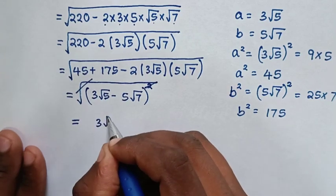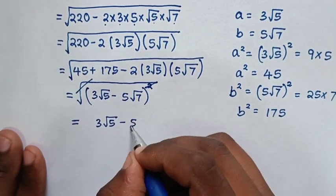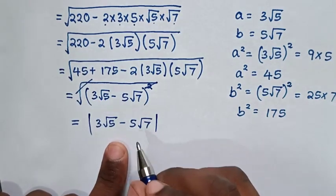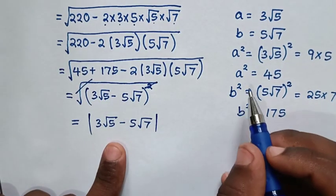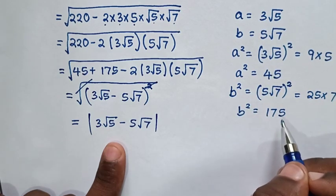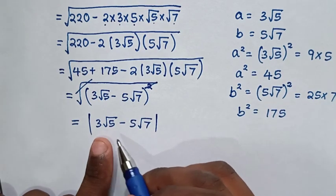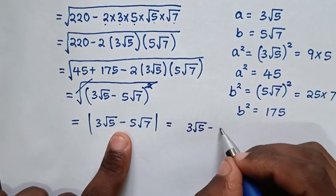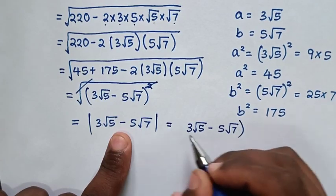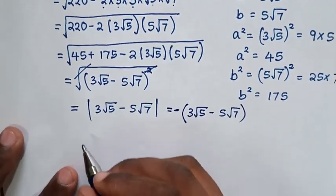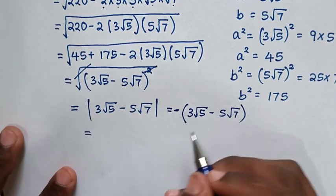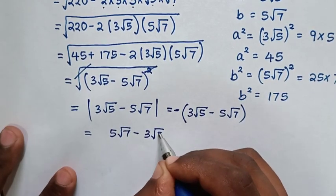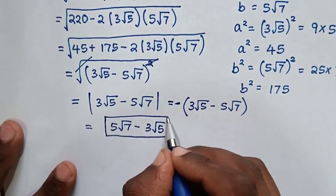This should be within absolute value, meaning the answer must be positive. But here the result is negative because a squared is 45 and b squared is 175, so a is smaller than b. Therefore, we multiply by negative, giving us 5 square root of 7 minus 3 square root of 5. So this is the final answer.